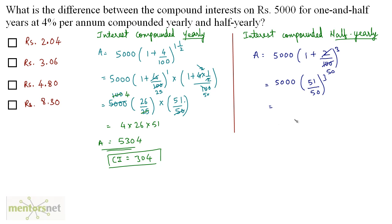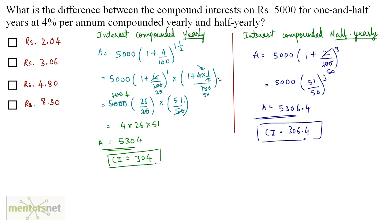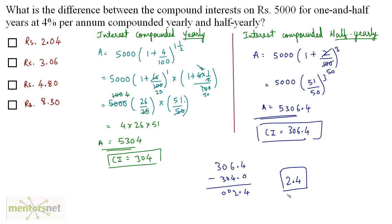Solving 5000 × (51/50)^3 gives an amount of Rs. 5306.40, so the compound interest compounded half-yearly is 5306.40 − 5000 = Rs. 306.40. The difference between the two compound interests is 306.40 − 304.00 = Rs. 2.40. Option A is the correct answer.